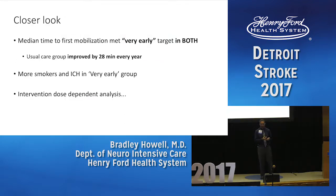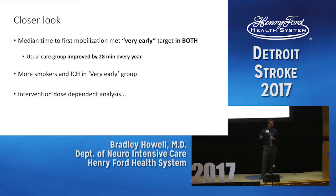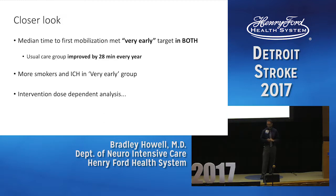Looking more closely at that study, the median time to first mobilization in the very early group was 18.5 hours, but in the usual care group it was 22 hours — by definition meeting the goal of the intervention group. It took eight years to enroll everyone, and the researchers documented that every year the usual care group got out of bed half an hour faster. So patients enrolled in year eight were getting out of bed four hours earlier than those in year one — a contamination effect in the control group.